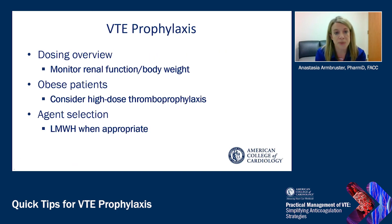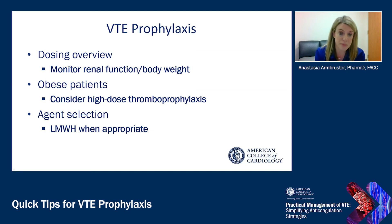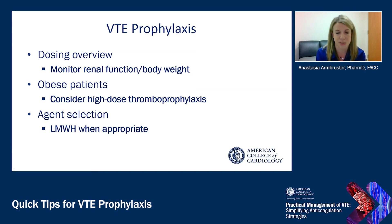To summarize the quick tips: monitor renal function and body weight closely, as for many agents the dose needs to be reduced as renal function decreases — and that is dynamic in hospitalized patients. For obese patients, consider high-dose thromboprophylaxis, with some preference to high-dose enoxaparin. For agent selection, low molecular weight heparin is preferred when appropriate, per the American Society of Hematology guidelines. Thank you for your time today — I hope you find these quick tips helpful.